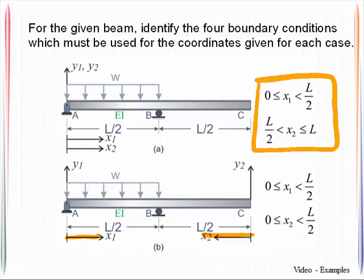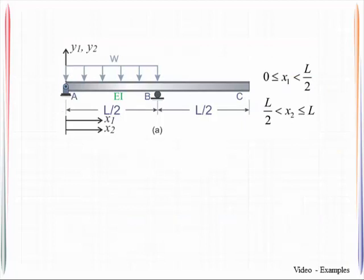So from zero to L over two, L over two to L, whereas down here, because each one starts at the end of a member, they're both valid on the range from zero to L over two. So let's look more closely at case number one.